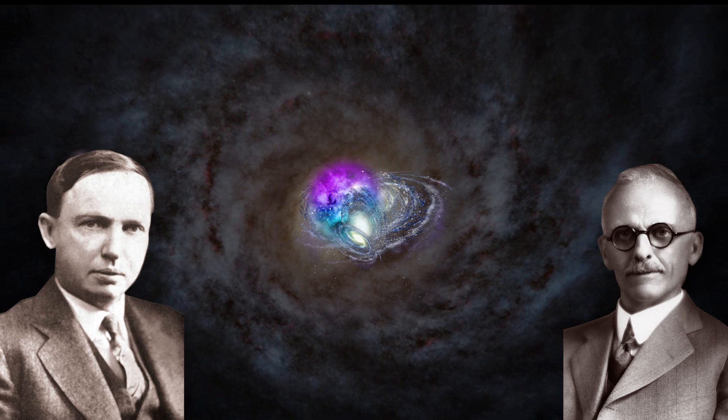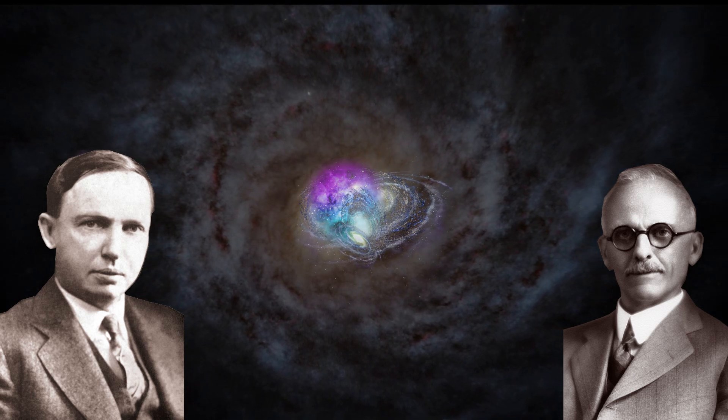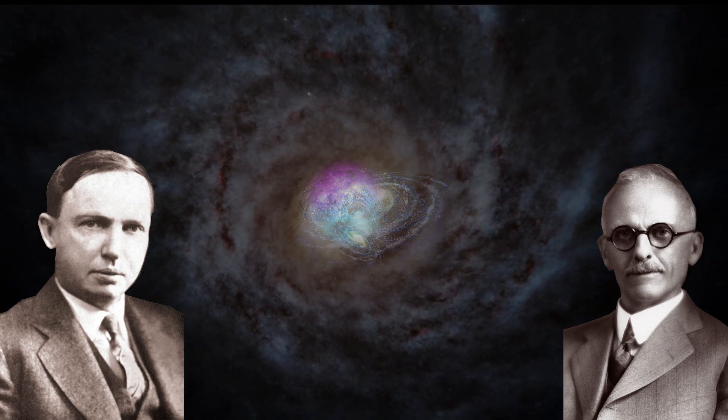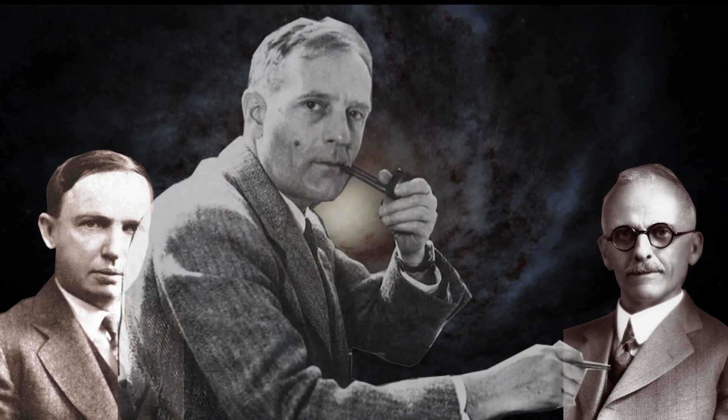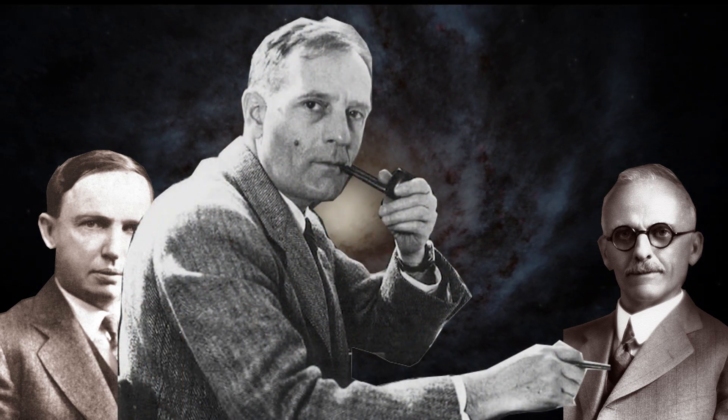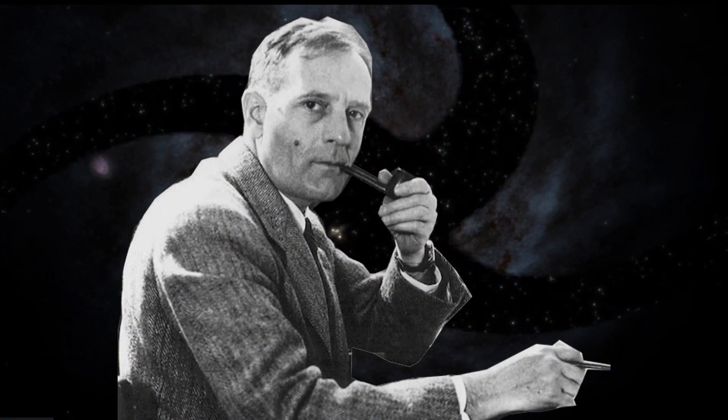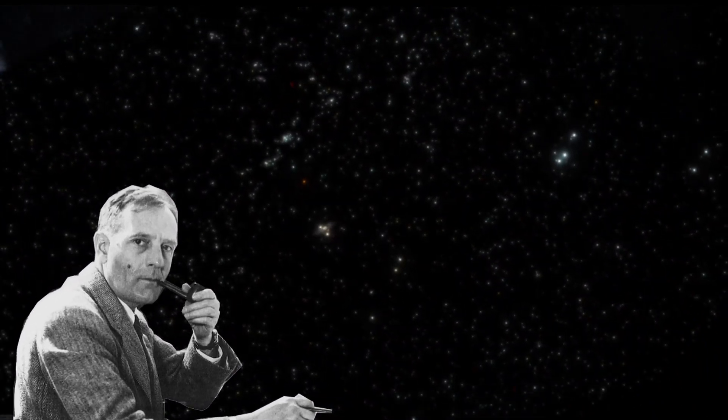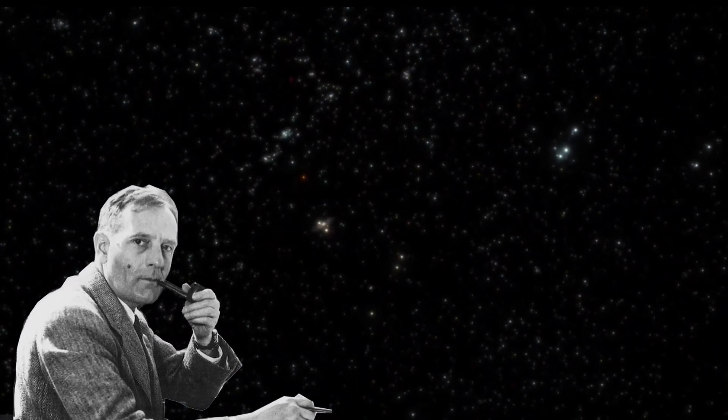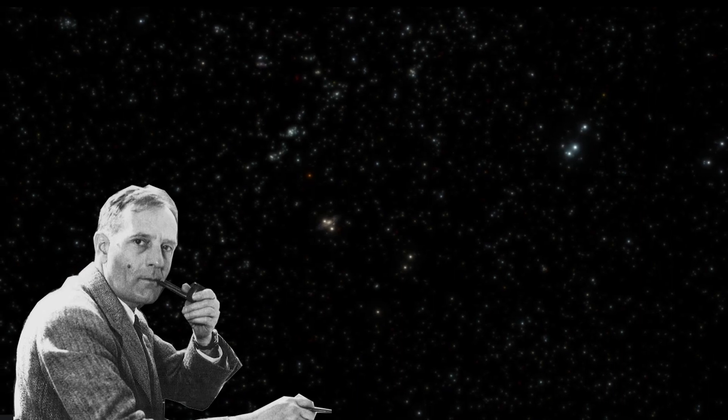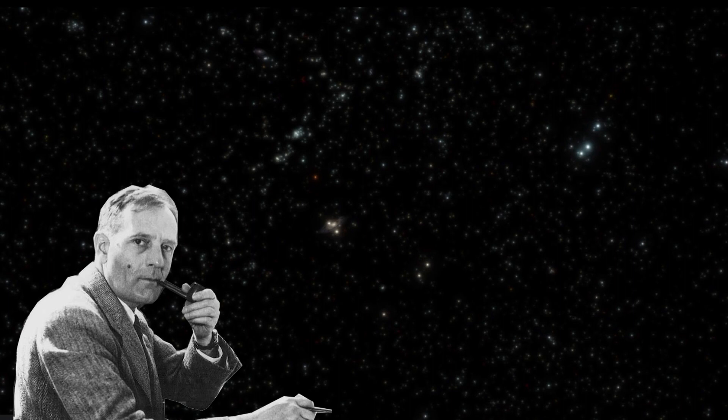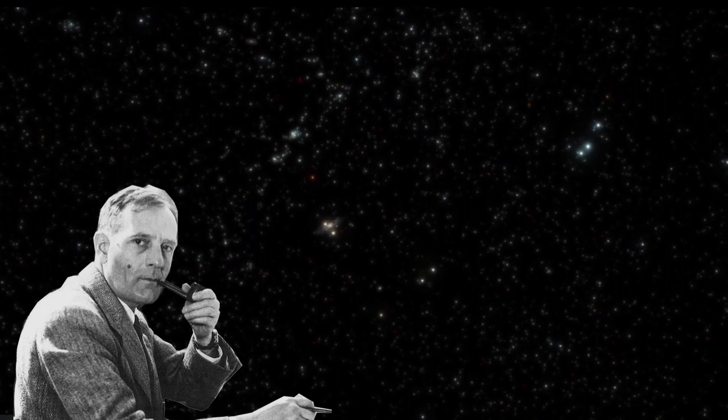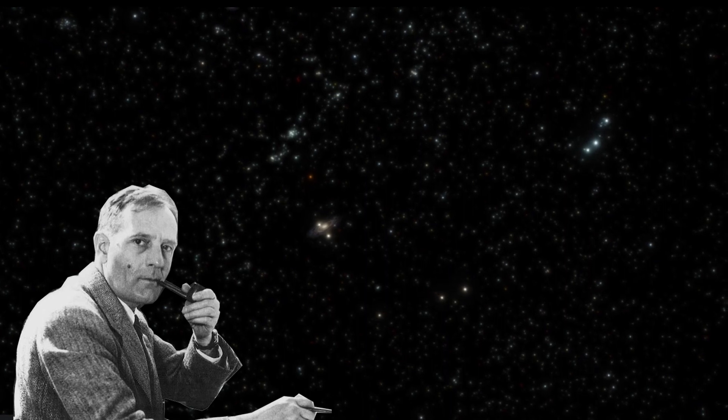Edwin Hubble became fascinated by this debate and decided he was going to be the one to settle it. He figured that if he could measure the distances to different galaxies, he could prove that those galaxies existed either within our own Milky Way or outside of it, settling it in either Shapley's or Curtis's favor. To do this, he had to measure the distances to hundreds of thousands of different galaxies.